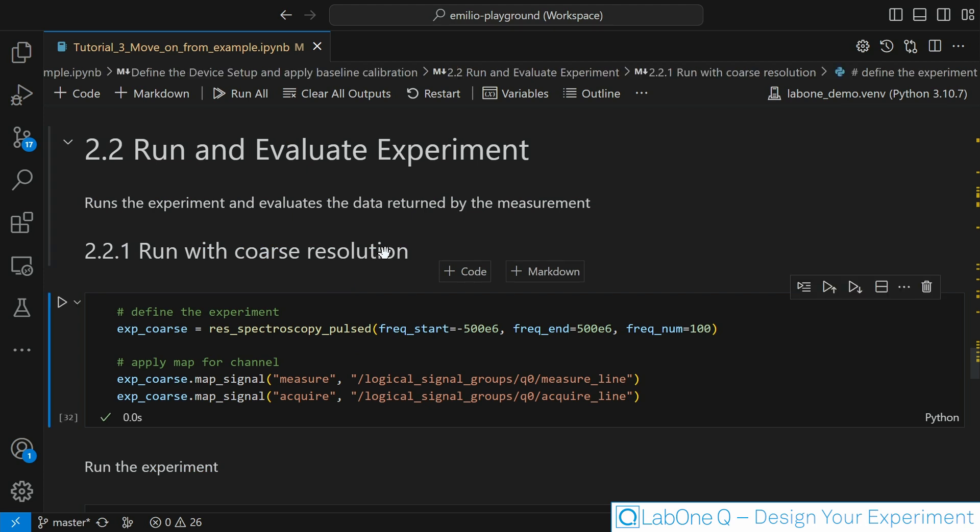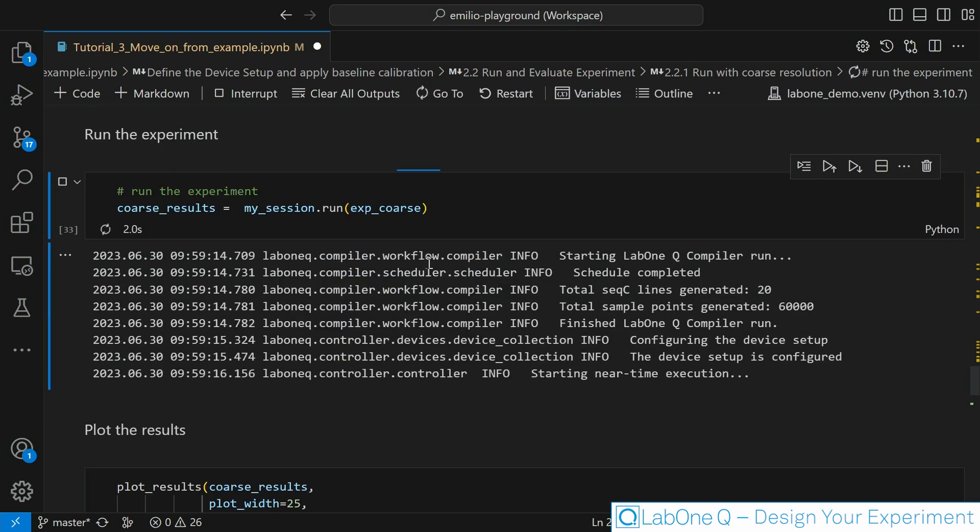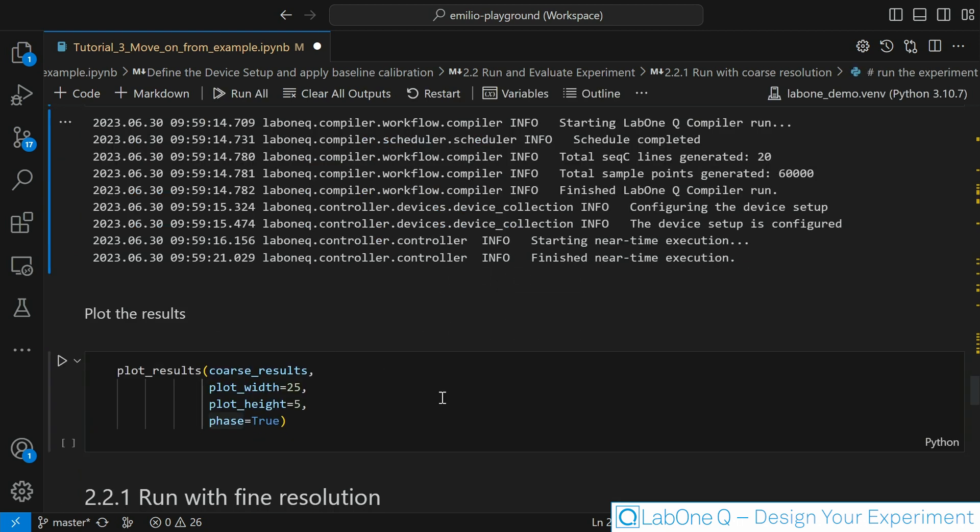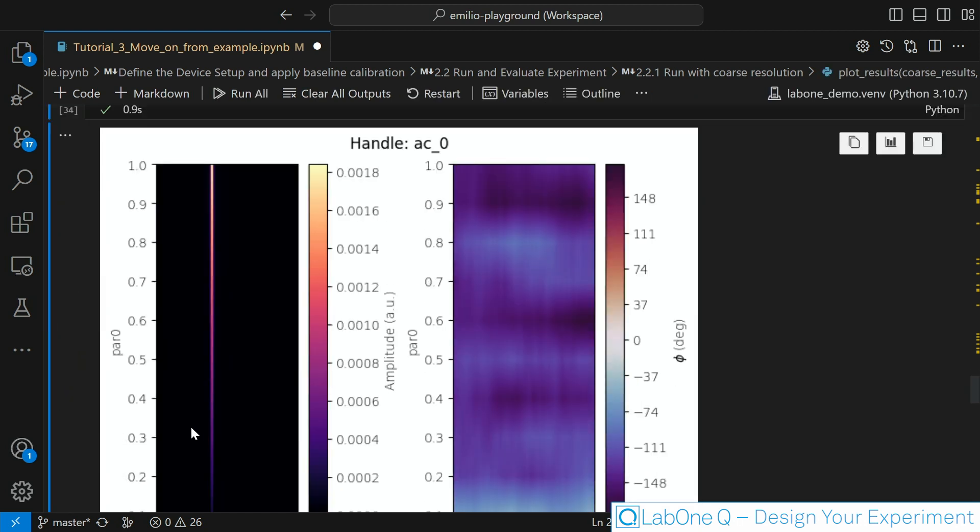Let's run exactly what we ran before, so our coarse experiment. It will for sure take a little bit more, for once because we are doing a near time sweep, and for the other because it's 2D sweep. Let's plot the result now. And there you go. Exactly as expected we see a narrow line of color exactly where the resonance would lie.